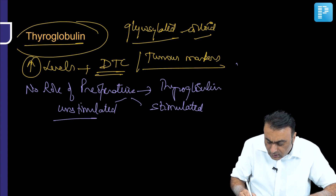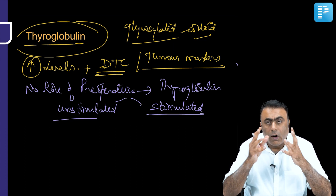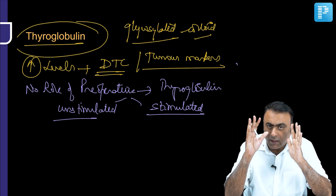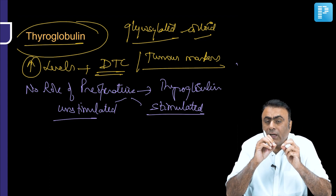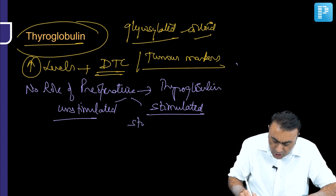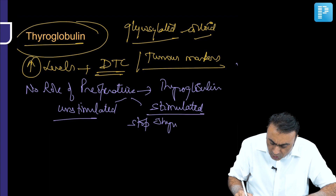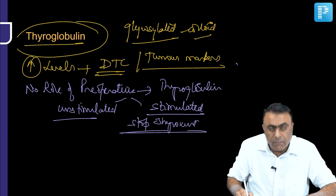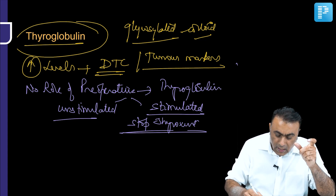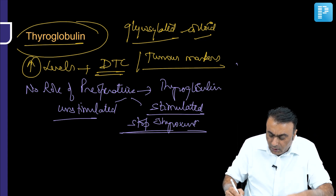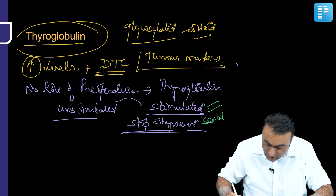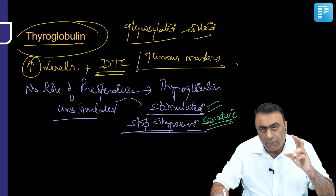Stimulated thyroglobulin level means stimulated by TSH — the patient stops thyroxine for at least two to three weeks prior to measurement. The stimulated level is always more important and more sensitive than the unstimulated level.